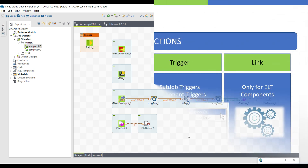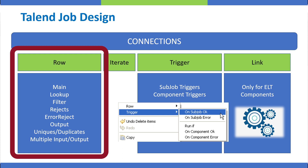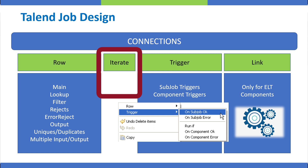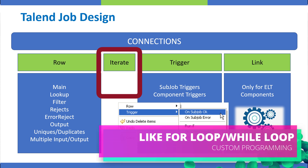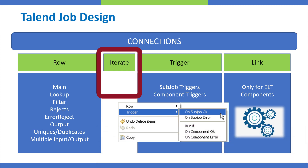On the screen, you can see that we have four different types of connections in Talend. We have the row connection, then the iterate connection. A row connection is used for passing on the actual data, whether it's consistent or inconsistent. The iterate connection is like a looping pointer — like a for loop or while loop in programming — and we iterate over all the rows for all subsequent components.